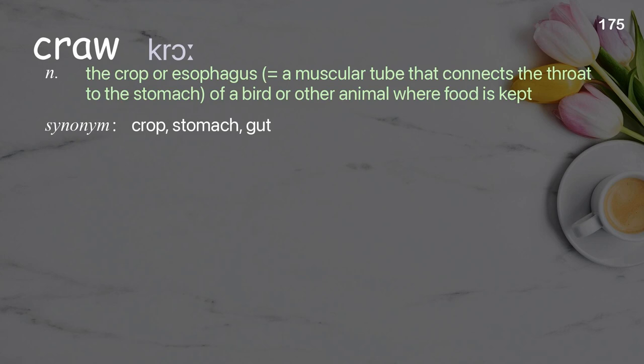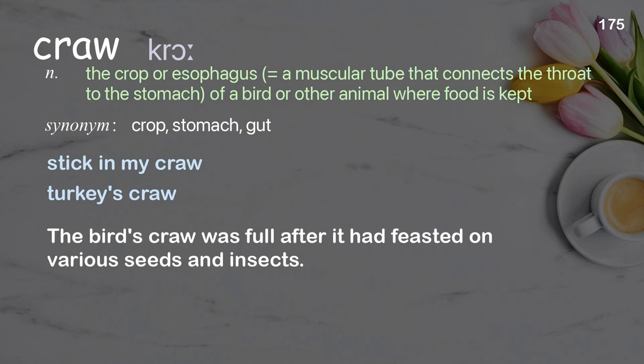Craw: a muscular tube that connects the throat to the stomach of a bird or other animal where food is kept. Examples: stick in my craw; turkey's craw. The bird's craw was full after it had feasted on various seeds and insects.